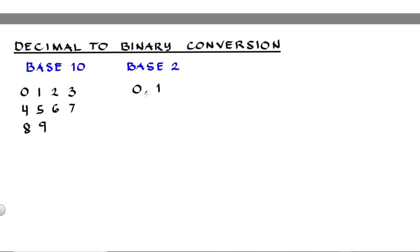For our first two examples, we will be using the repeated find and subtract method. For our first example, we will convert 57 decimal into binary.